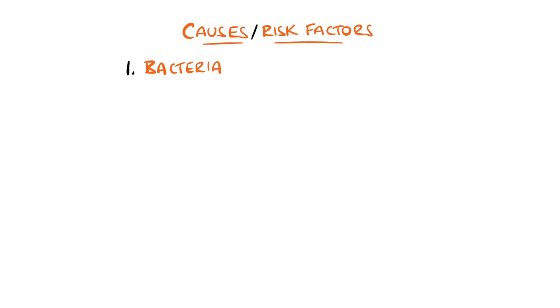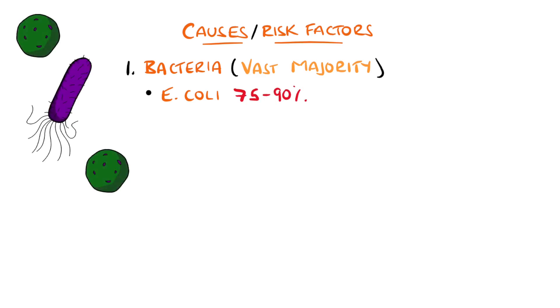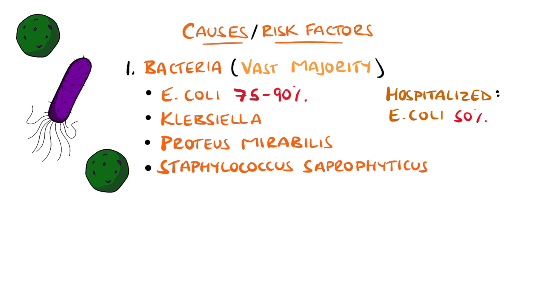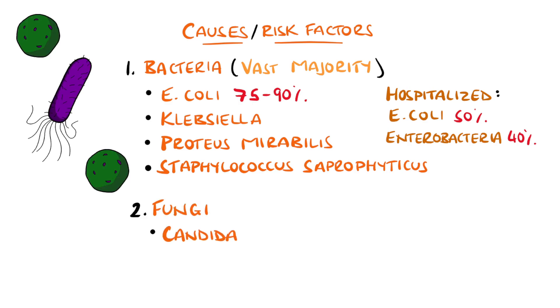In most cases, it is bacteria that cause both cystitis and pyelonephritis, in particular E. coli, making up 75 to 90% of cases in the community, with other species including enterobacteria like Klebsiella or Proteus mirabilis. The most common gram-positive bacterium is Staphylococcus saprophyticus. In hospitalized patients, E. coli makes up around 50%, with enterobacteria around 40%. Fungi are the most common non-bacterial cause, the main example being Candida species.